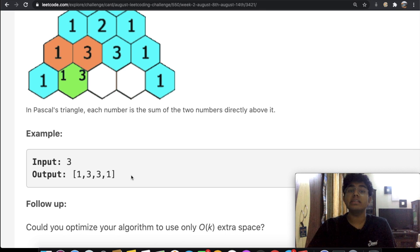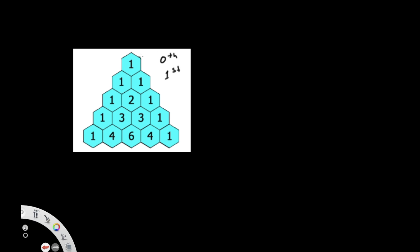Let's take a look at what Pascal's triangle actually is. The 0th row and 1st row are at the top. The first element of each row is always 1 and the last element is also always 1. In the second row we have 1, 2, 1 — the middle element comes from adding the two elements above it: 1 + 1 = 2. In the third row, 1 + 2 = 3 and 2 + 1 = 3, giving us 1, 3, 3, 1.